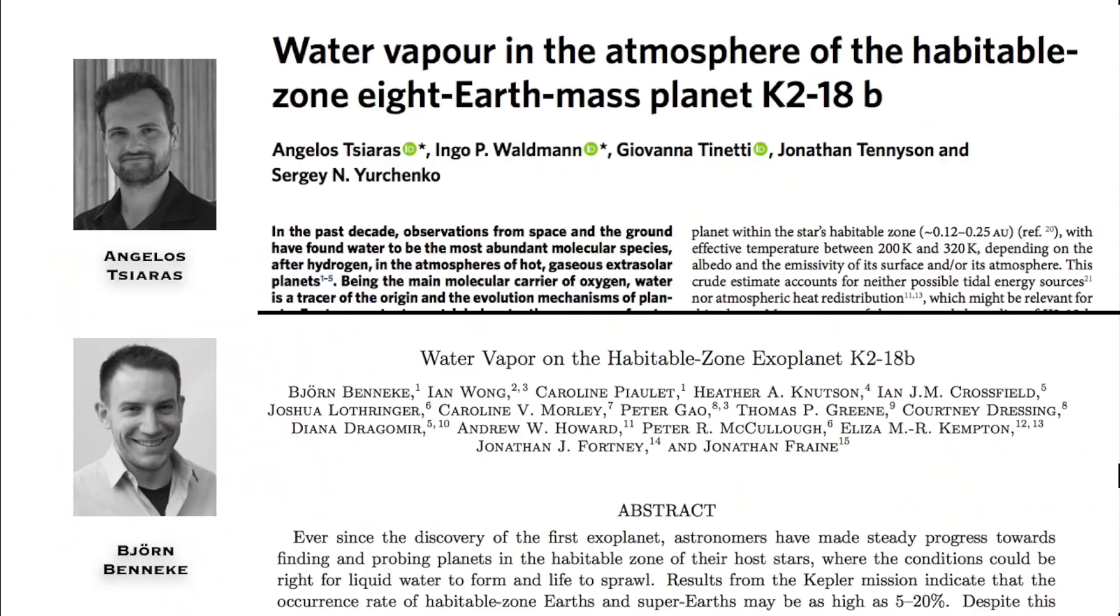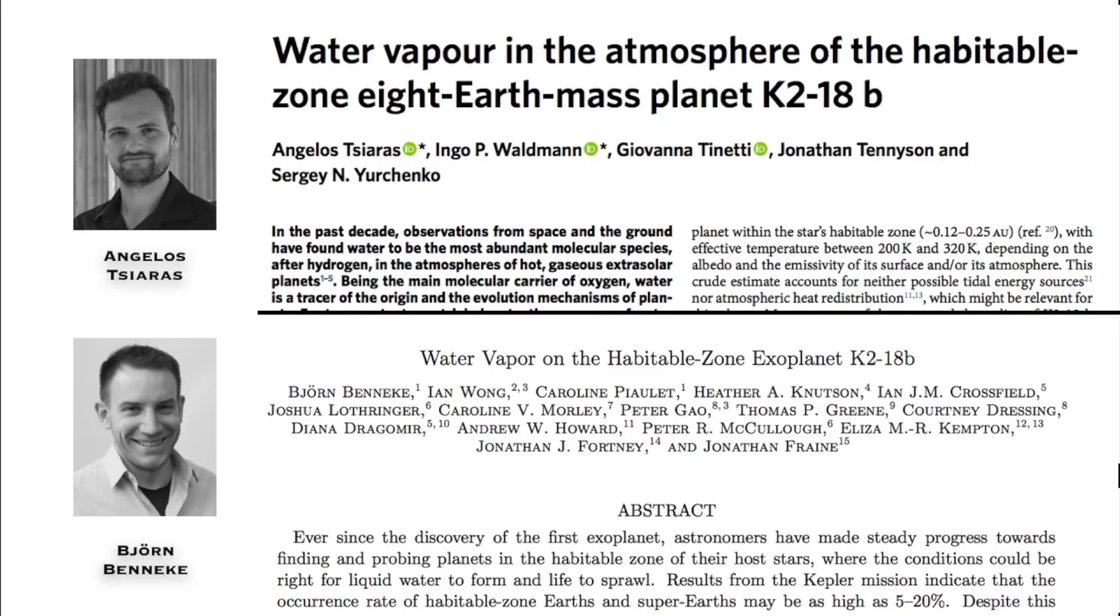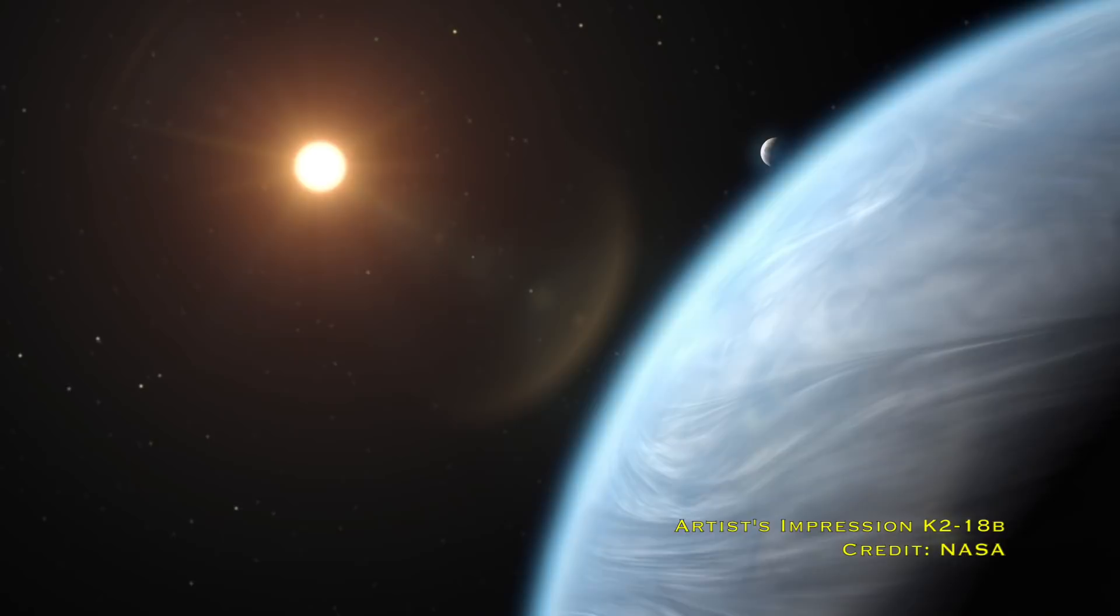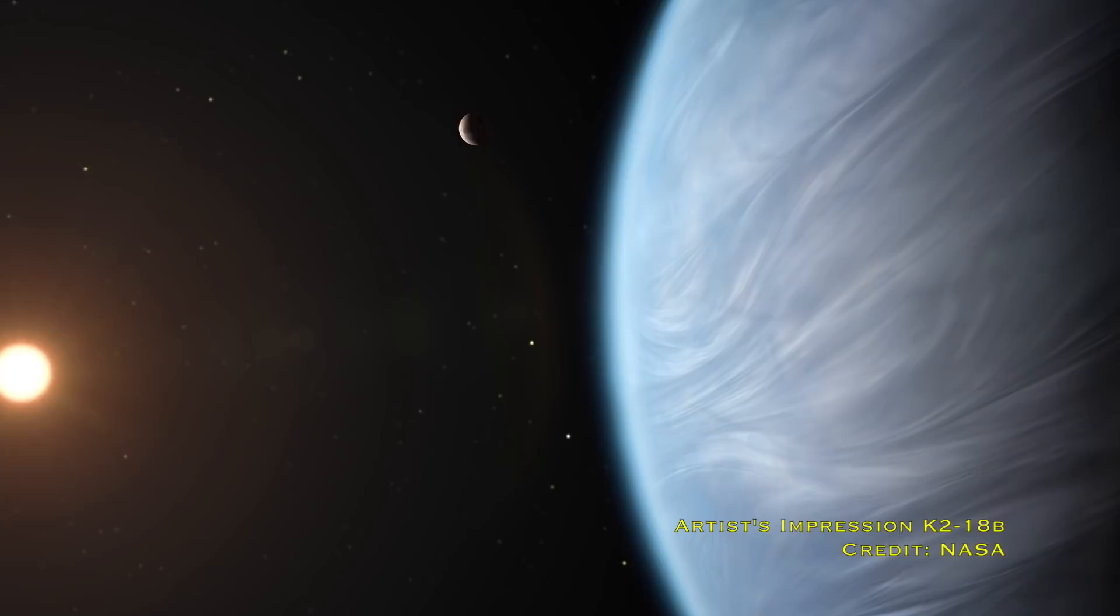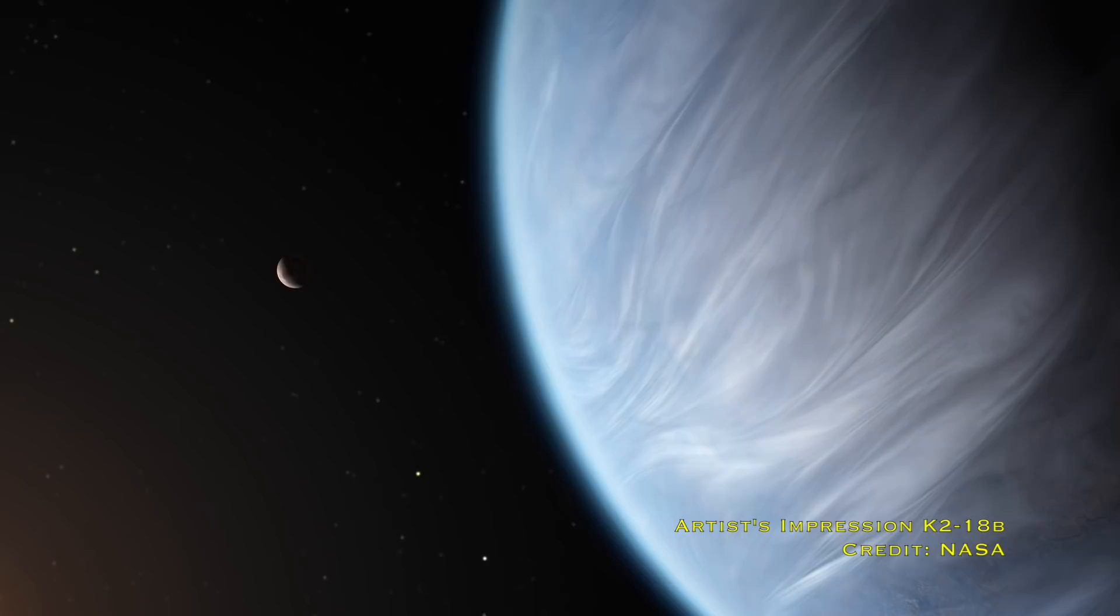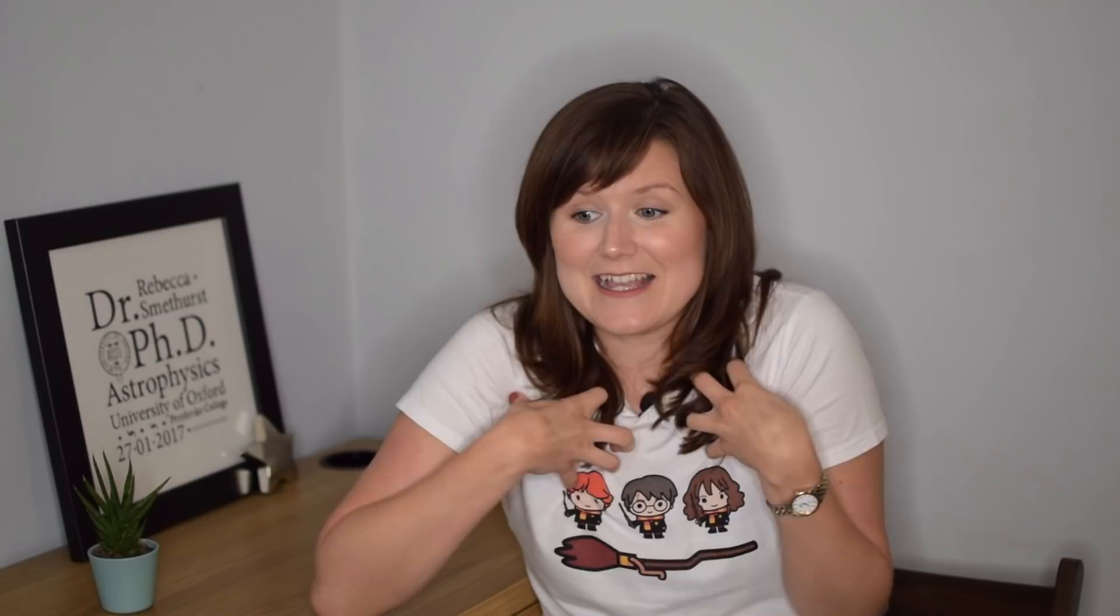Then in September, two separate groups, one led by Tsiaras and one by Benneke, announced the first detection of water vapor in an exoplanet's atmosphere that was in the habitable zone around its star. So because this planet was in the habitable zone, it was much more likely that this water would be liquid rather than vapor form. This planet was K2-18b and it was very much a mini Neptune. It wasn't Earth-like at all. It was a big gas giant. Its atmosphere was mostly hydrogen, but it was still the first planet detected with water in its atmosphere in a habitable zone as well.